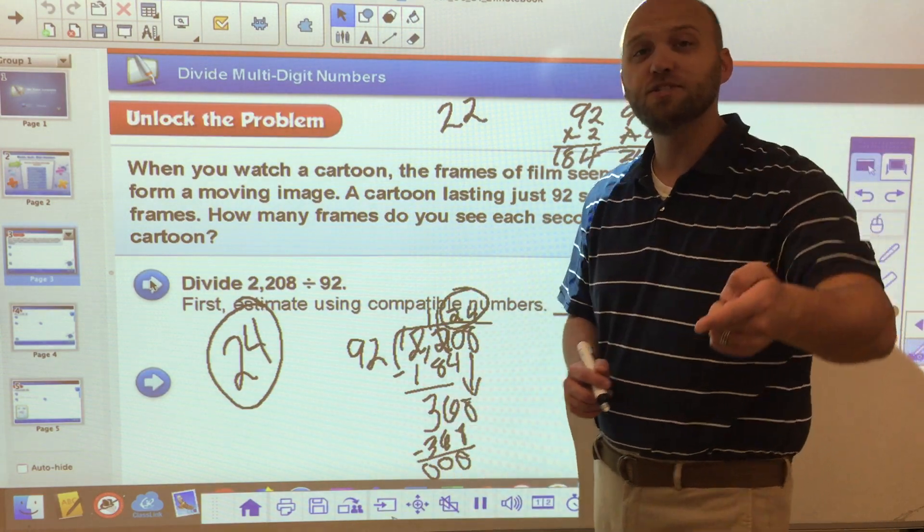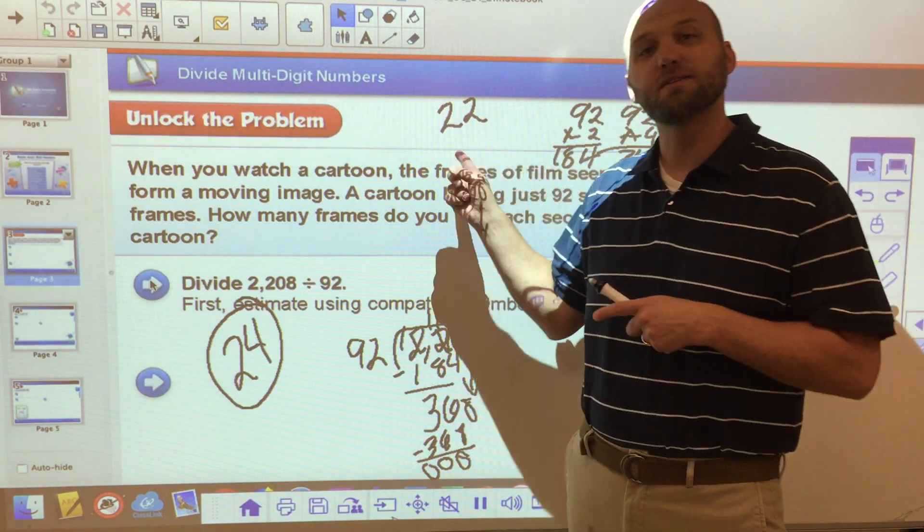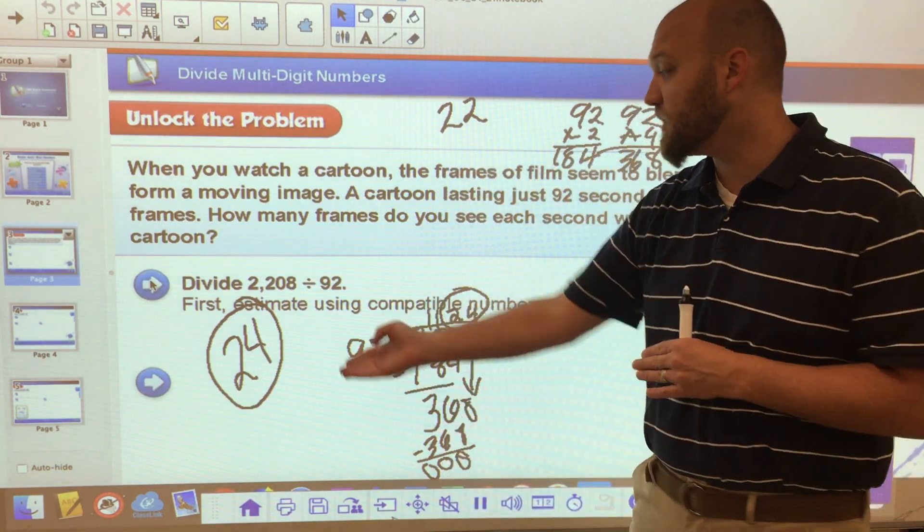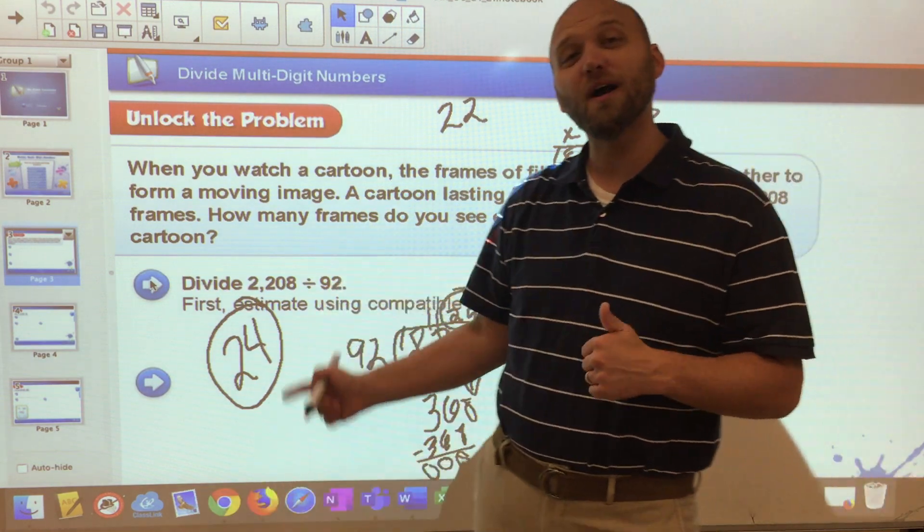Now, if I go back just to check my work to see if I made any mistakes anywhere, what was my original estimation? It was 22. Is 24 somewhere in the ballpark of 22? Yeah. So I know that that's probably correct.